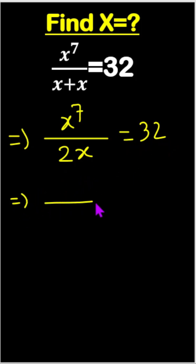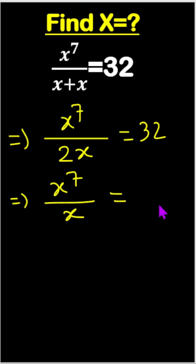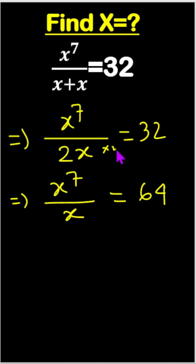So here x to the power 7 divide x equals 64. Once we make multiplication times 2, it means the 2 and 2 cancel out, and 32 times 2 is 64.